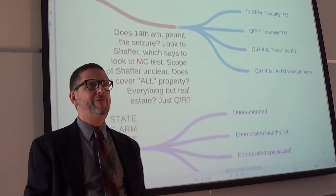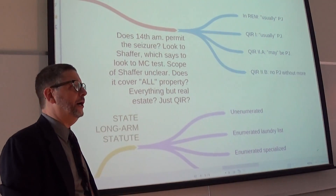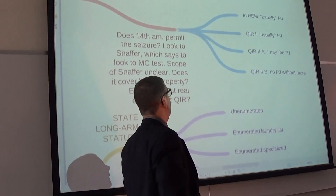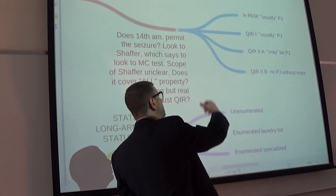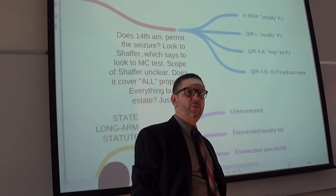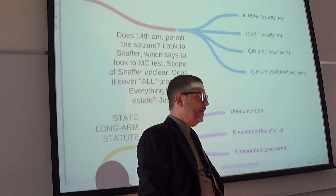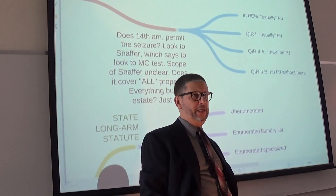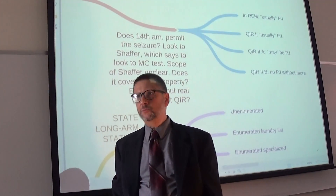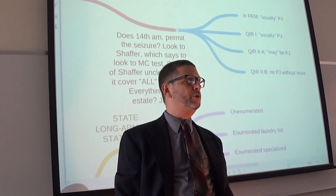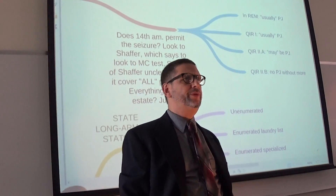Marshall gave us four different scenarios and suggested how each might be analyzed. The first would be a pure in rem. In rem jurisdiction is when the property is the subject matter of the suit and the whole world is bound, such as a probate proceeding. Marshall said that in such a case, there would usually be jurisdiction over the property found within the state.